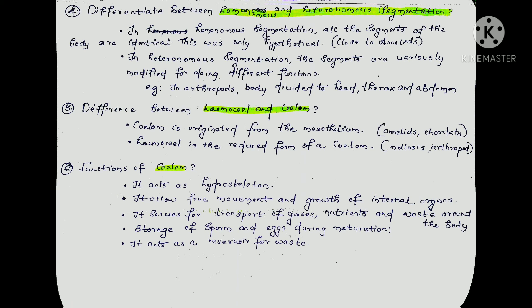We are going to discuss the coelom topic — the functions of the coelom. There are five functions: first, it acts as a hydroskeleton; second, it allows free movement and growth of internal organs; third, it serves for the transport of gases, nutrients, and waste around the body; fourth, it provides storage of sperms and eggs during maturation; fifth, it acts as a reservoir for waste.